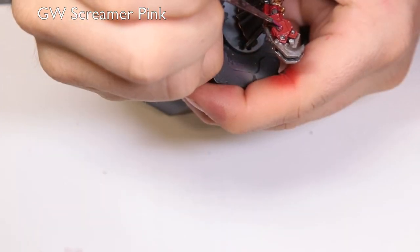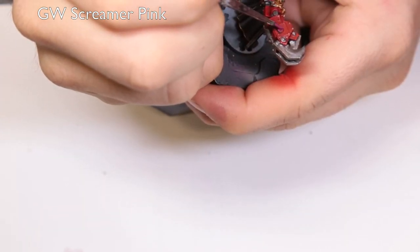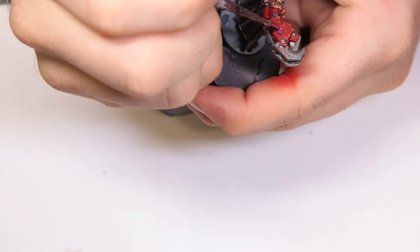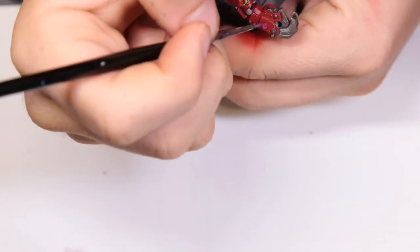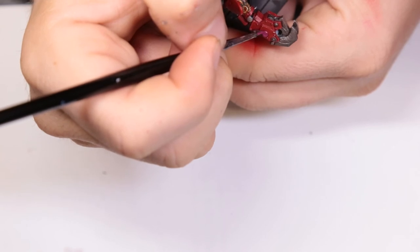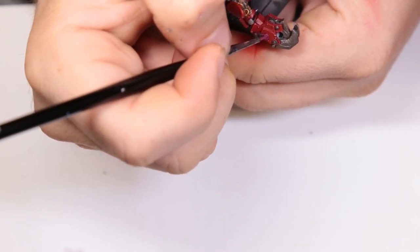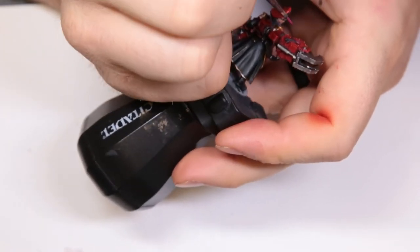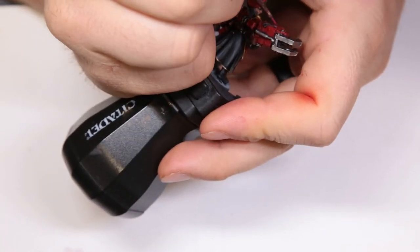Here we're coming in with Screamer Pink for the wax seal of the Purity Seal. Unfortunately, I don't know where the footage went for it. I highlighted it up with Screamer Pink in the next step, and unfortunately that footage just turned into free atoms. So, it happens. Part of the learning process of doing these videos for you all.